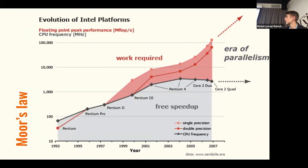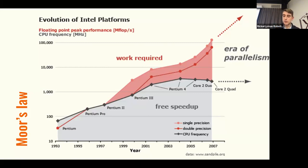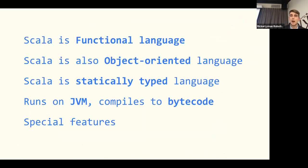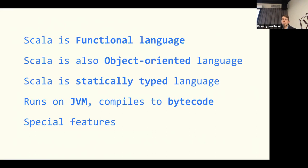I would emphasize this in five statements: Scala is a functional language, Scala is also object-oriented, Scala is a statically typed language, it runs on the JVM and compiles to bytecode, and it has special features that make it really special. We will unfold each of these statements to develop an understanding of the language design and how it impacts the applications of the language.